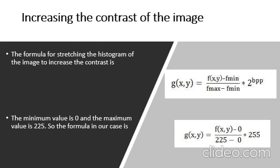So the formula in our case is: g(x,y) = [f(x,y) - 0] / [225 - 0] × 255.